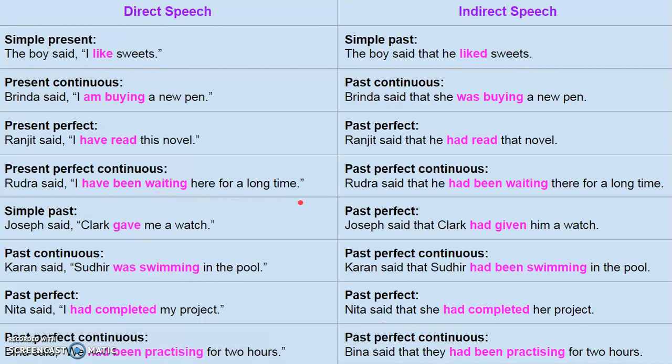Similarly, in the case of past perfect continuous, there is no need to change the tense of the verb. For example, 'Veena said we had been practicing for two hours.' In indirect speech: 'Veena said that they had been practicing for two hours.' So 'had been practicing' remains the same in both direct and indirect speech.